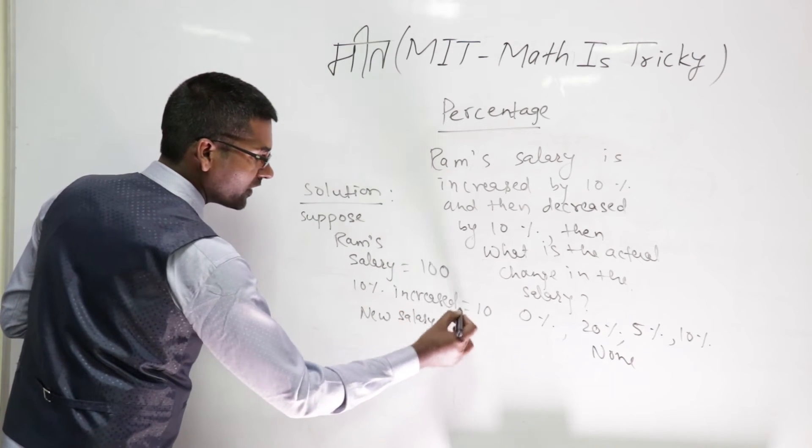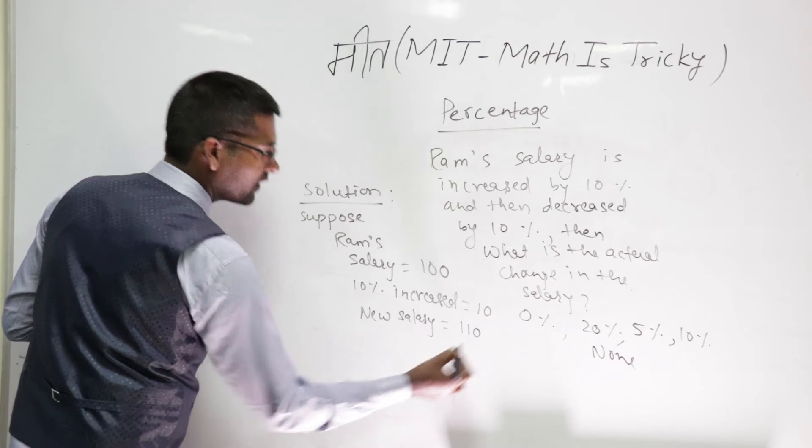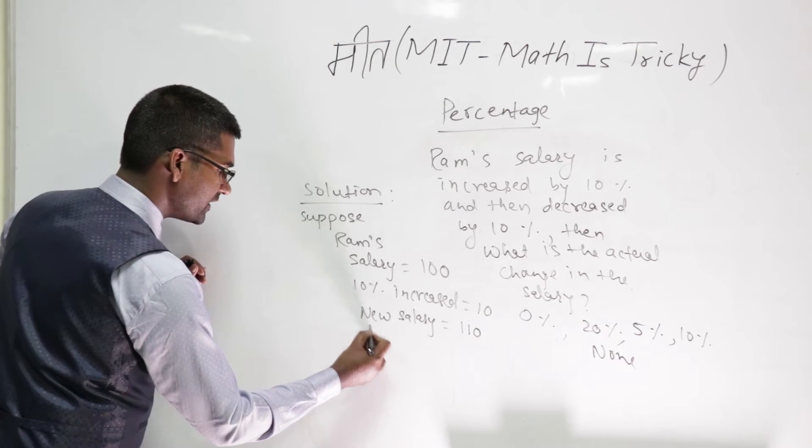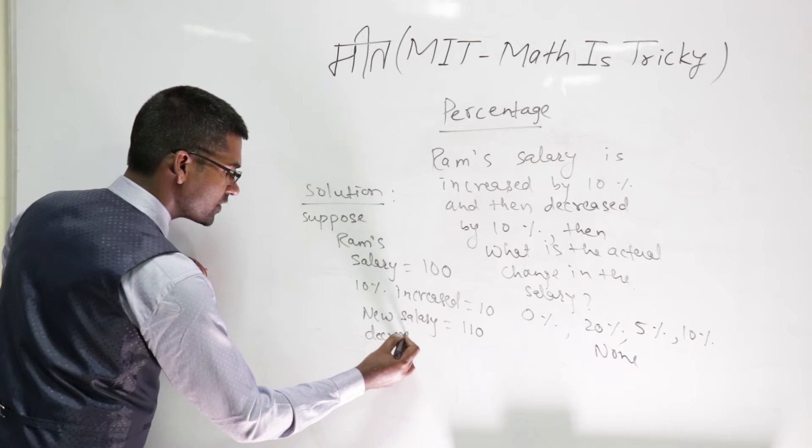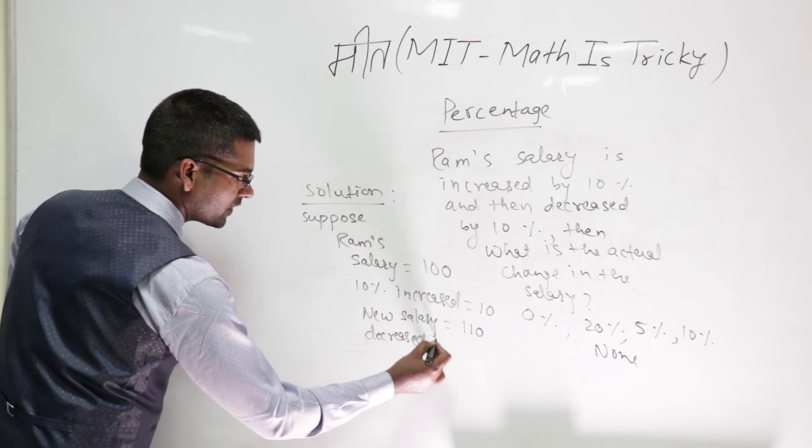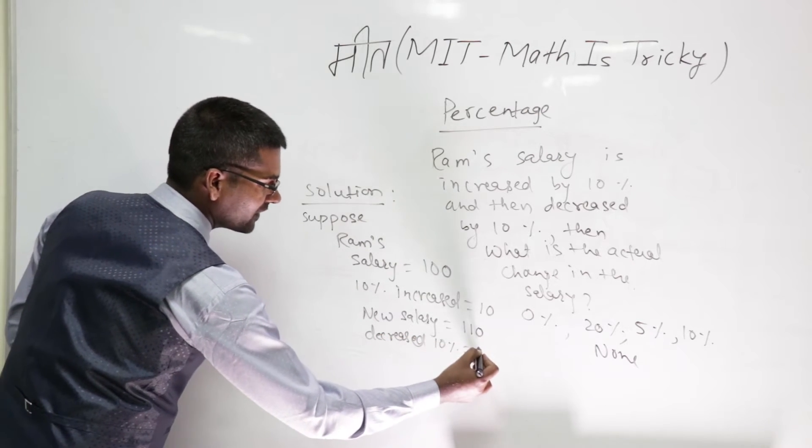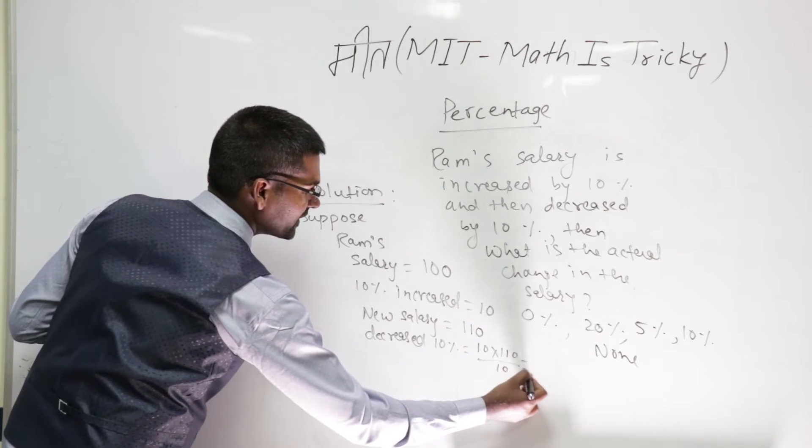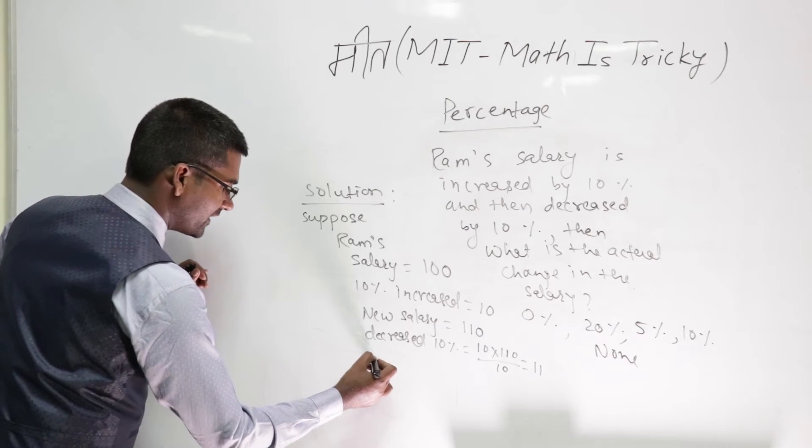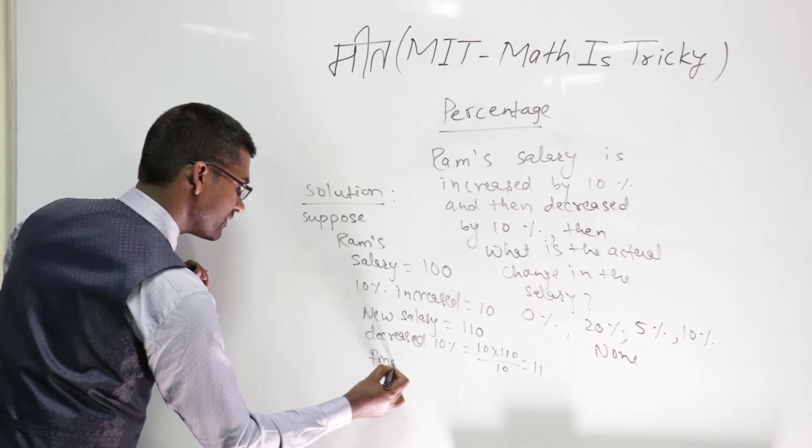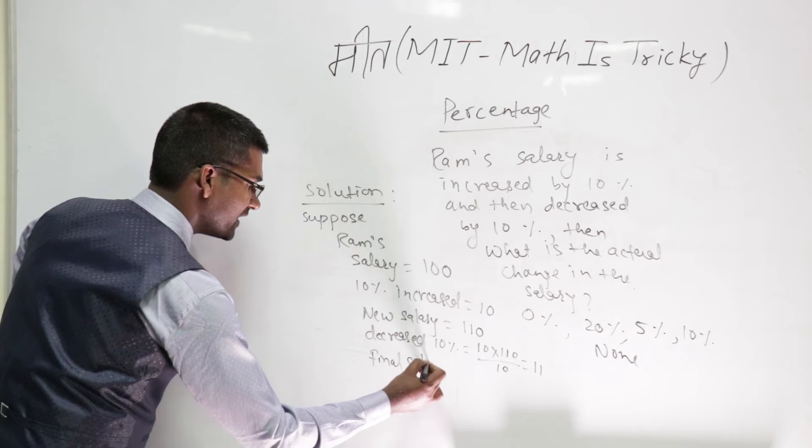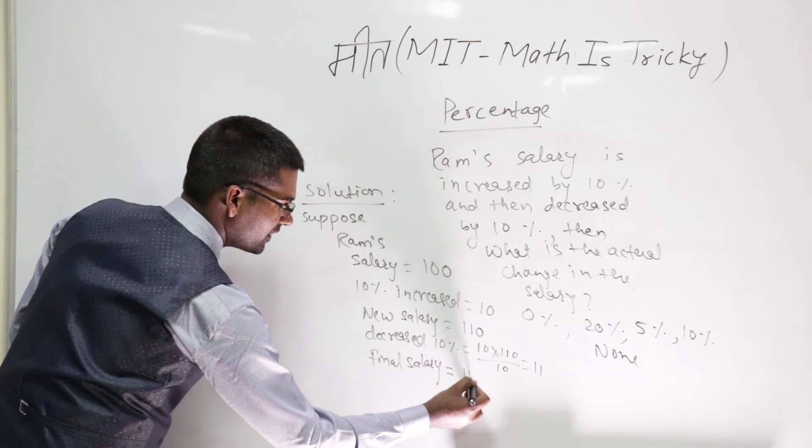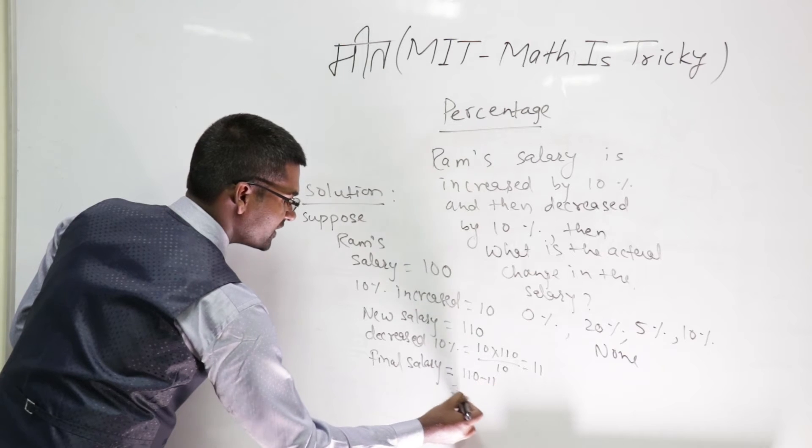Now what is done after that? It is decreased by 10 percent. That means 10 into 110 by 100, you will do here. So you'll be getting 11. So the final salary will be 110 minus 11, which is 99.